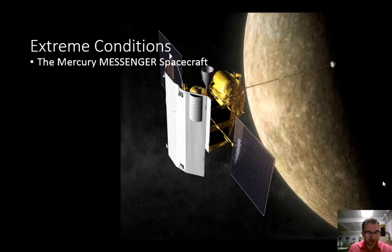Engineers designed a sunshade to protect Messenger's instruments. It's made from ceramic fabric made of elements such as silicon,